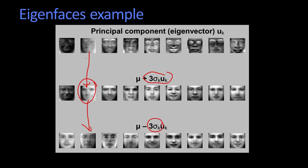So one way of thinking about it is that these components — the first components — just changed whether the lighting direction was from the left to the right. Let's take another one. This component here, if I add positive, it tends to look a lot more feminine. When I go negative, it tends to look a lot more masculine. So each of these different eigenvectors are adding in some other different variation, some other different element.